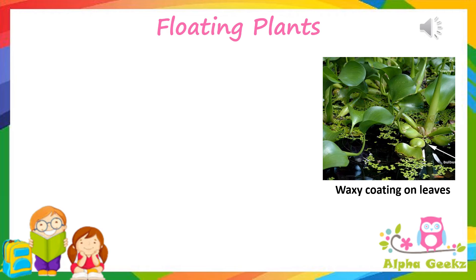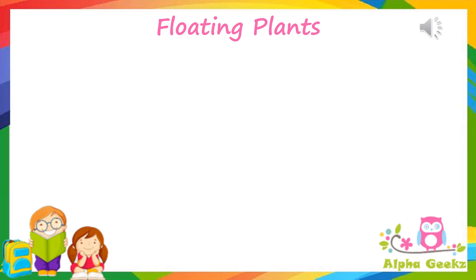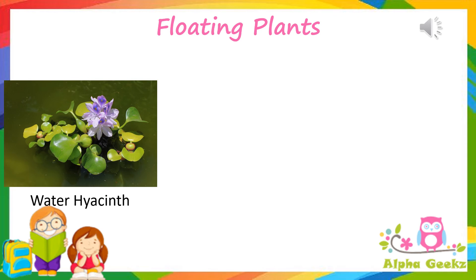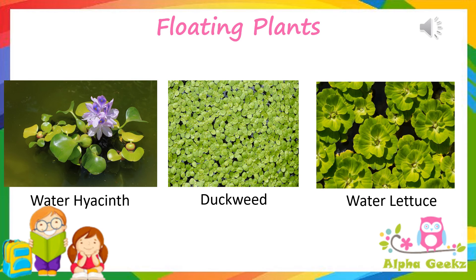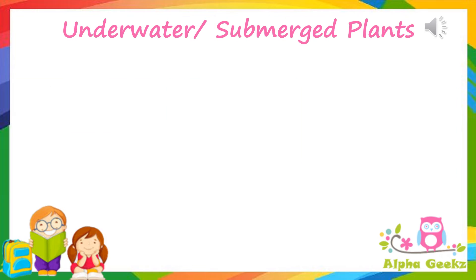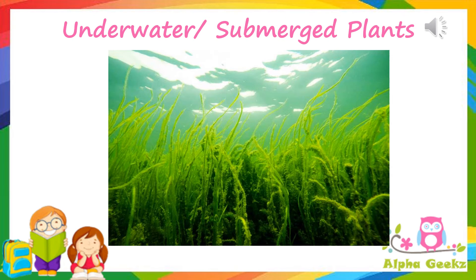Some examples of floating plants are water hyacinth, duckweed, and water lettuce. Plants which remain completely submerged in water are called underwater or submerged plants.